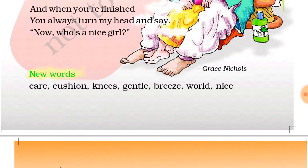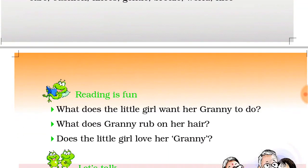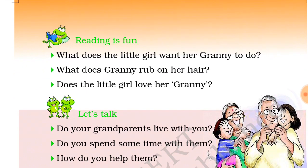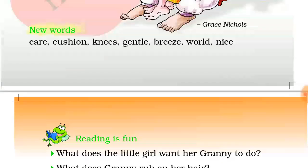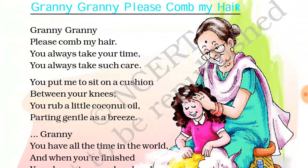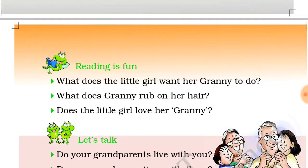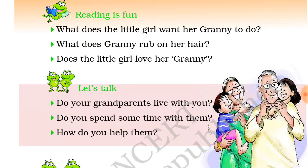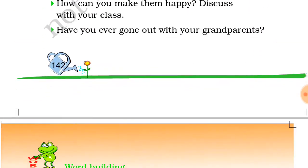What does the little girl want her granny to do? The little girl wants the granny to comb her hair. What does granny rub on her hair? Granny rubs coconut oil on her hair. Does the little girl love her granny? Yes, the little girl loves her granny.